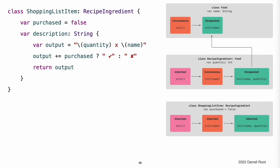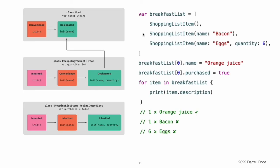ShoppingListItem also adds a computed description property, which provides a textual description of a ShoppingListItem instance. ShoppingListItem does not define an initializer to provide an initial value for purchased, because items in a shopping list always start out unpurchased. Because it provides a default value for all the properties it introduces and does not define any initializers itself, ShoppingListItem automatically inherits all of the designated and convenience initializers from its superclass. This figure shows the overall initializer chain for all three classes. You can use all three of the inherited initializers to create a new ShoppingListItem instance.